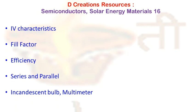A very important parameter is efficiency. Efficiency, as the name suggests, is basically the ratio between the maximum electrical power that the array can produce and the amount of solar radiance hitting the array.